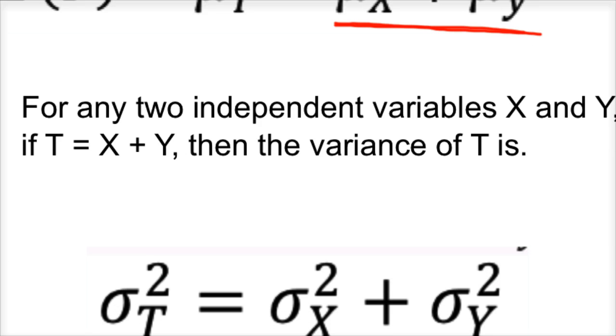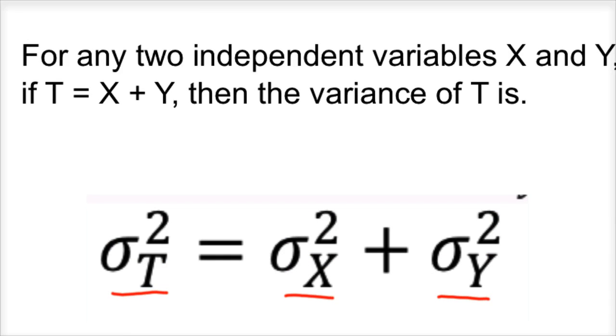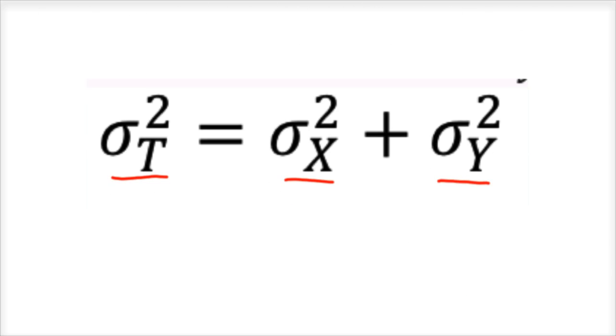A little more complicated for standard deviation variance. For any two independent variables X and Y, if T equals X plus Y, then the variance of T is, we're dealing with variance, not standard deviation. The variance of your total equals the variance of your X plus the variance of your Y. That's what sigma squared represents.